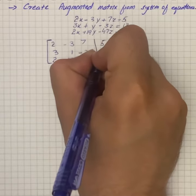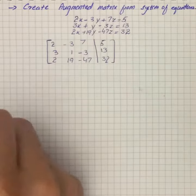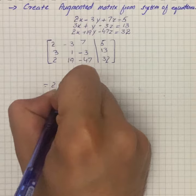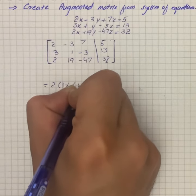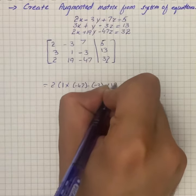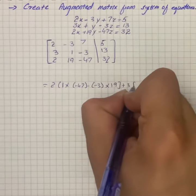Then we can write 5, 13, and 32. So we will start solving it. This gives us 2 into 1 multiply by -47 minus -3 multiply by 19, and on the other side we have 3 into 3 multiply by -47 minus 3 multiply by 2.